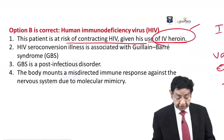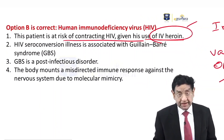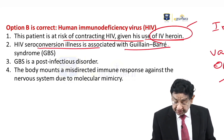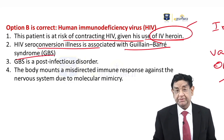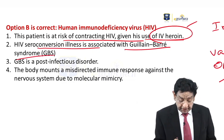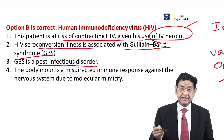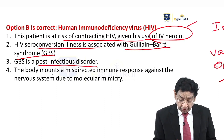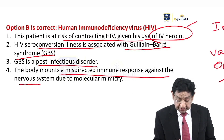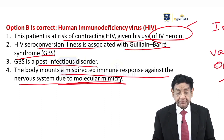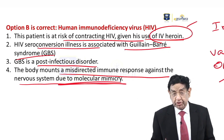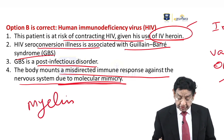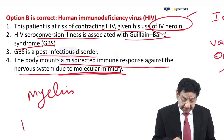In this question, the patient is likely to have HIV, and there may be seroconversion that can lead to GBS — Guillain-Barré syndrome. It is a post-infectious disorder. In this case, it was HIV which induced this problem. The body mounts a misdirected immune response against the nervous system due to molecular mimicry, and this molecular mimicry occurs primarily against the myelin sheath. So it is a type of demyelinating disorder.